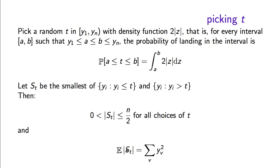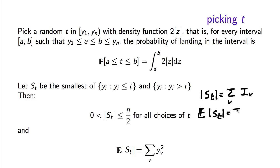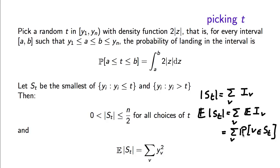Why is this identity true? We write the cardinality of S_t as the summation over v of an indicator random variable I_v, which is 1 if v is in the small side of the cut and 0 otherwise. The expectation of |S_t| is then the summation over v of the expectation of these 0–1 random variables, which equals the summation over v of the probability that v is in the set.